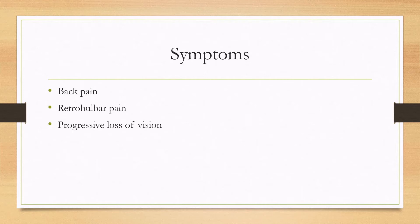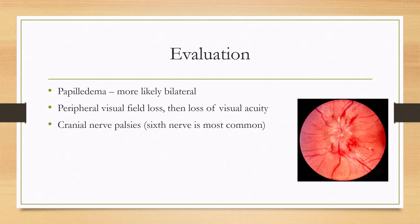More rare than the transient visual losses is a progressive loss of vision, which is more severe. In terms of evaluation on physical exam, on the fundoscopic exam you can see papilledema, which is more likely to be bilateral than unilateral. You can see an example here showing blurring of the optic disc margins and swelling. There can be a loss of visual field, usually peripheral, followed by loss of visual acuity if untreated. Cranial nerve palsies can also be seen on exam, with the sixth nerve being the most common.